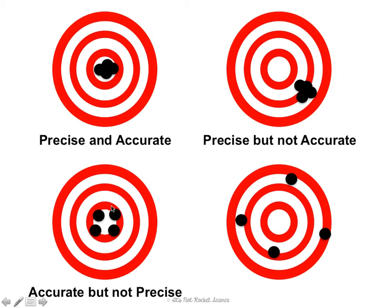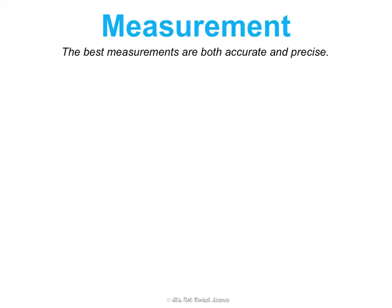This third person is close to accurate — they're pretty correct, they're in the center — but they're not precise. They're getting all around the same spot. And then this last person is not accurate or precise. They're not correct, and they're not consistent in their throws.